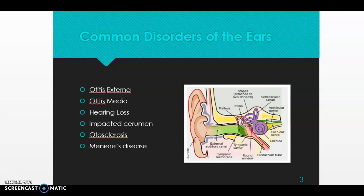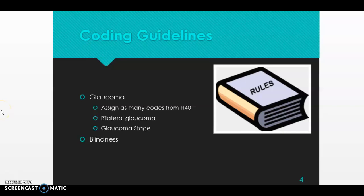When we look at the coding guidelines, there are not any coding guidelines for Chapter 8, which is the diseases of the ear and mastoid process, but there are some for Chapter 7, the diseases of the eye and adnexa. Specifically, we have coding guidelines for glaucoma and for blindness.